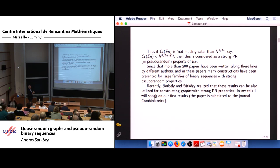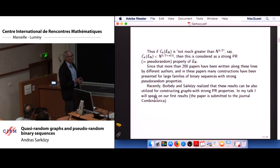So that if we know that the correlation of order k is of about this order of magnitude, or at least not much greater, then we may consider this as a strong pseudo-random property of EN. In the text I will abbreviate the word pseudo-random by PR. Since that, more than 200 papers have been written along these lines, and the important thing is that in many of these papers, many explicit constructions have been given for large families of binary sequences with strong pseudo-random properties.